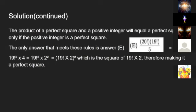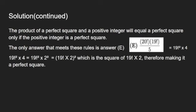The only answer that meets the rules for a perfect square is answer E, which is 20 factorial times 19 factorial divided by 5, equaling 19 factorial squared times 4. This can be rewritten as 19 factorial squared times 2 squared, which equals the square of 19 factorial times 2, therefore making it a perfect square.